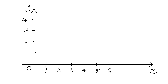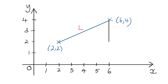Let's look at another example. Given two points (2, 2) and (6, 4), if we join both with a line segment, we can clearly see that this line segment L is not a horizontal line, neither is it a vertical line. It's actually a slanted line. So we can't just take 6 minus 2 or 4 minus 2.